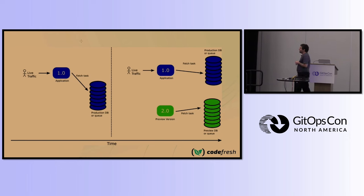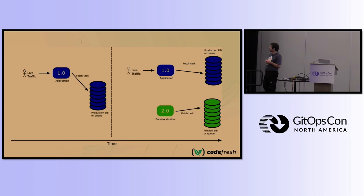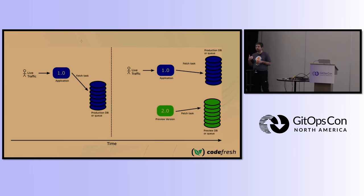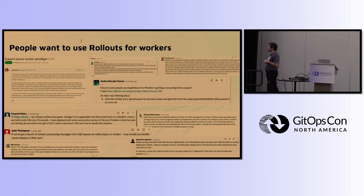The simplest solution: launch the service and create a preview database or preview queue, connect the preview version there. Production stays unaffected — only one version looks at the production queue. The preview version has its own database, which is also good for testing because you control the data. And people in Slack ask the same question: 'How do I use Argo Rollouts with workers?'